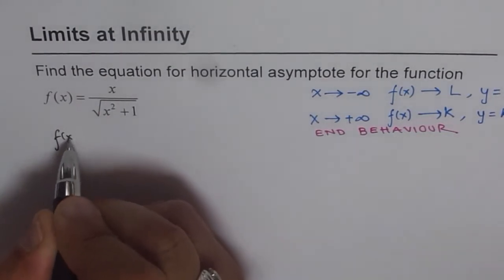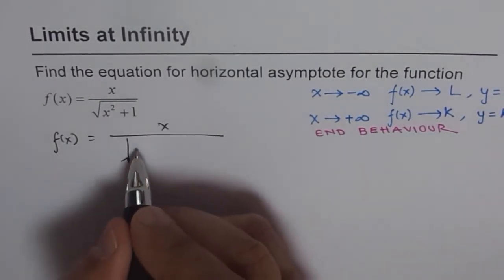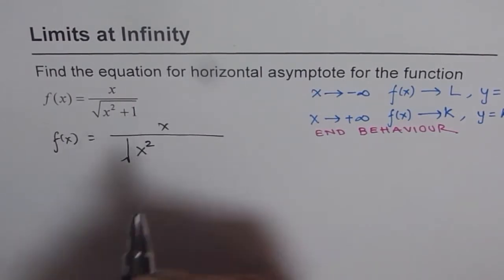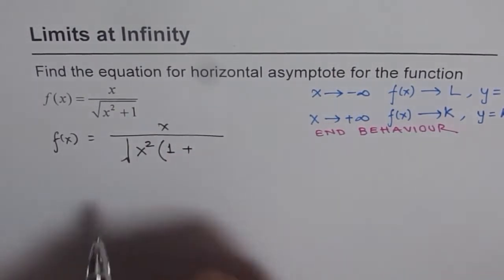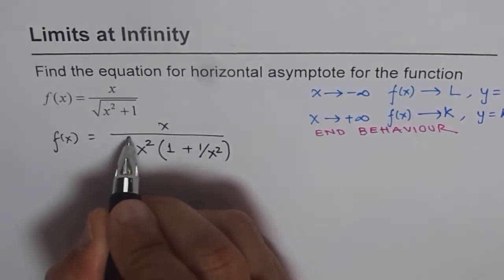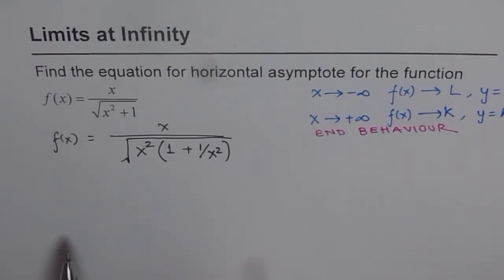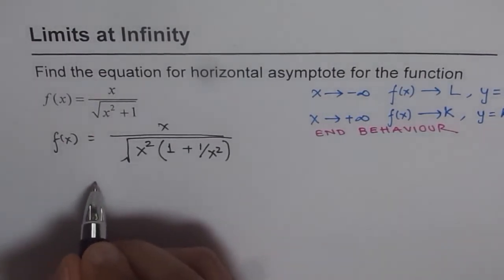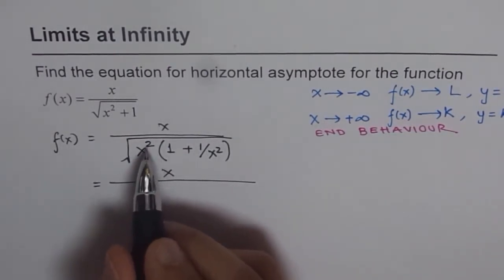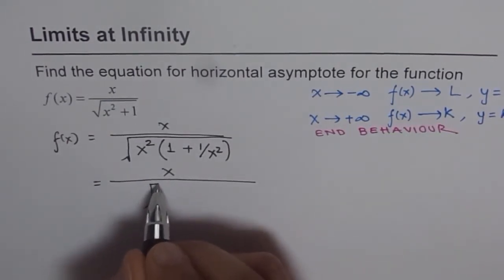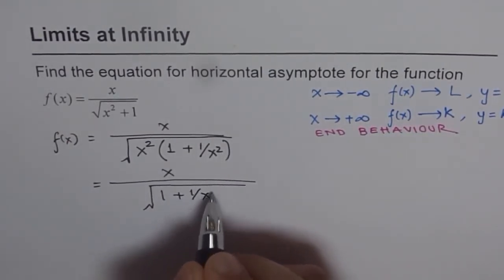So f(x) = x over the square root of x squared plus 1. Inside the square root, we can factor out x squared. When we factor out x squared, x squared divided by x squared is 1, and the remaining term is 1 over x squared. So inside the square root we now have x squared times the quantity 1 plus 1 over x squared.